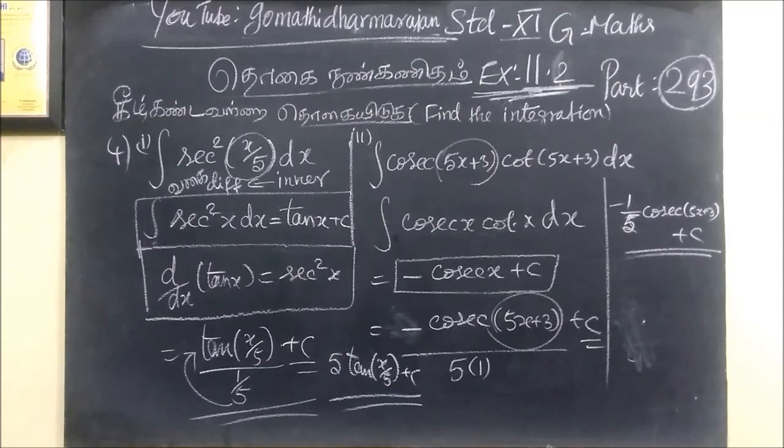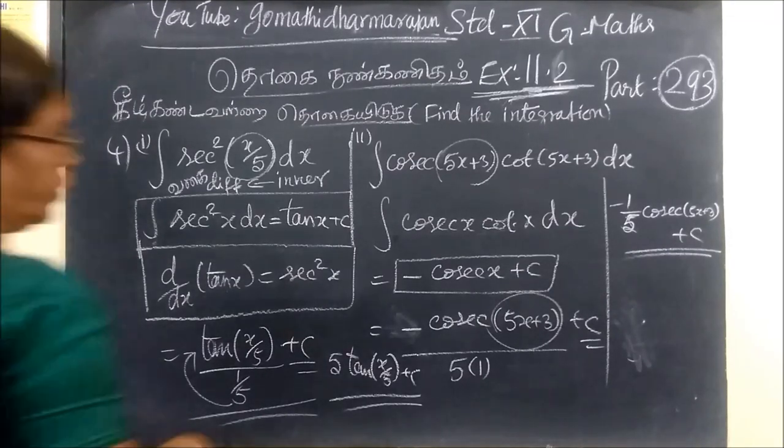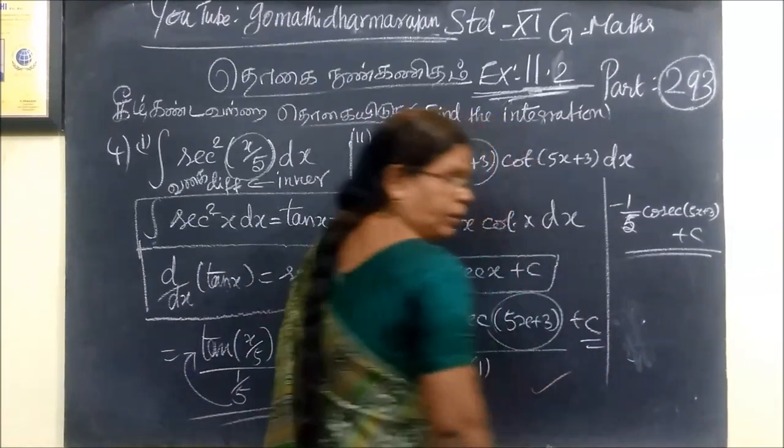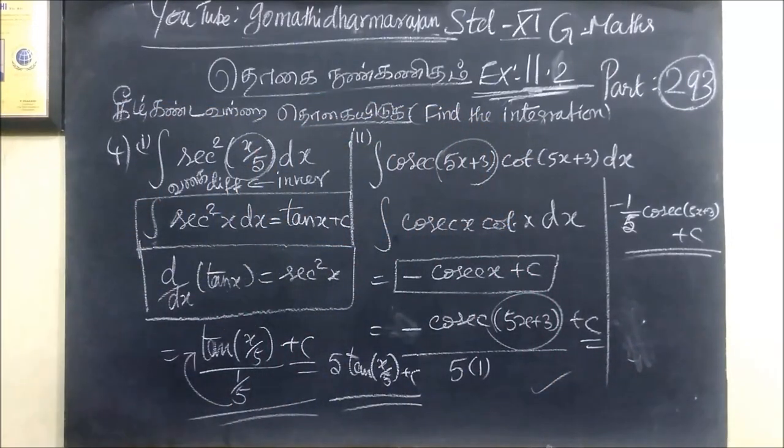Minus 1 by 5, so that one also correct. Third one minus 2. Minus 2? What is it? Third one. Minus 2.